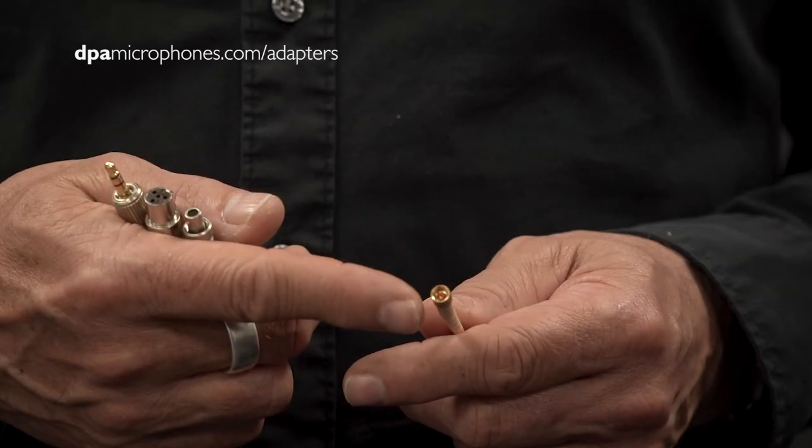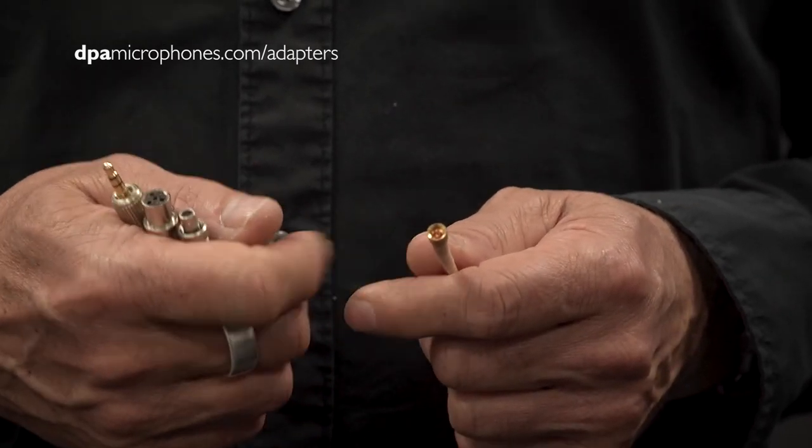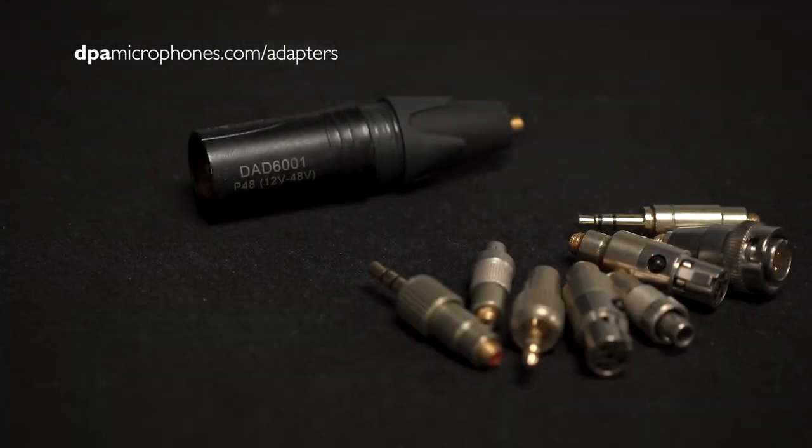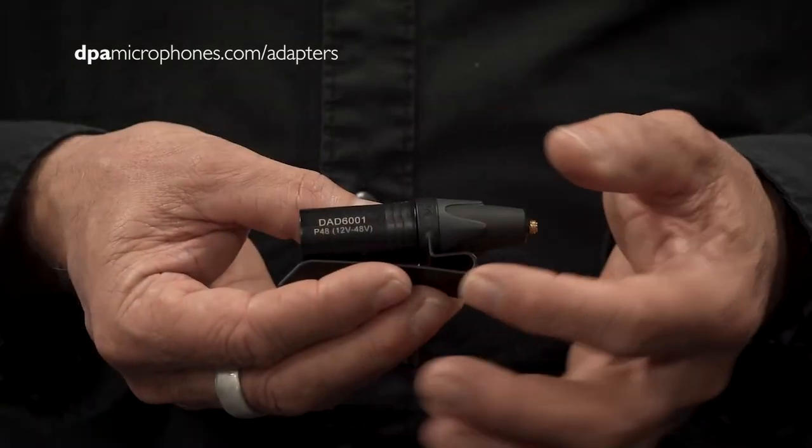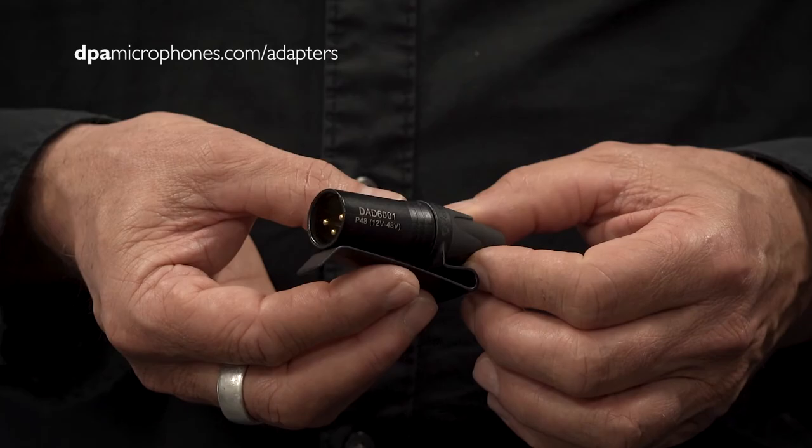All DPA mics are delivered with either micro dot or any of the three standard connectors for wireless systems. If you wish to connect your headset directly to a 12 to 48 volt phantom power supply, you should use this phantom power adapter, the DAD6001.